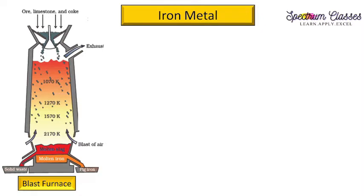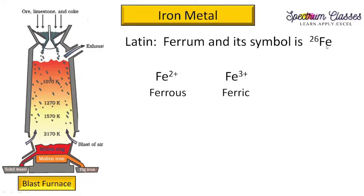Now we come to ferrous alloys. Before discussing ferrous alloys, let us have a brief overview of the metal iron. Ferrum is the Latin name of iron, represented by the symbol Fe. Its atomic number is 26 and it is a d-block element. In the +2 oxidation state it is termed ferrous, and in the +3 oxidation state it is termed ferric.